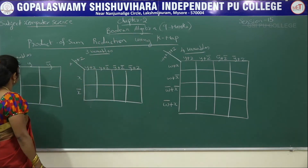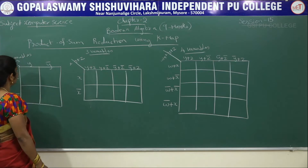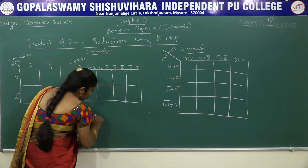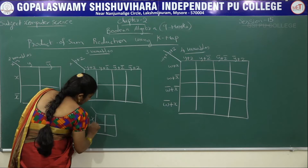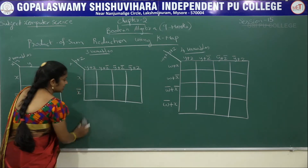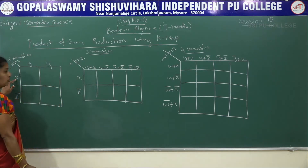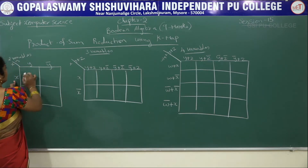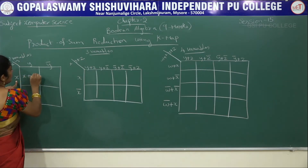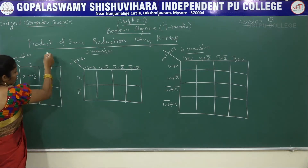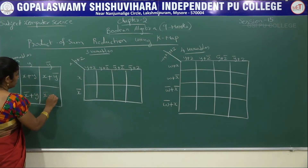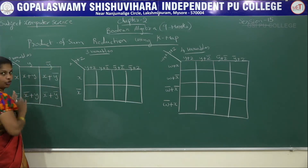If you have 2 variables, X and Y, you totally get 4 cells. In minterm, for the first variable we write bar first. But for maxterm, the first entry is non-bar (non-complement), then the second is complement. So the cells represent: X plus Y, X plus Y bar, X bar plus Y, and X bar plus Y bar. You take the corresponding row and corresponding column.